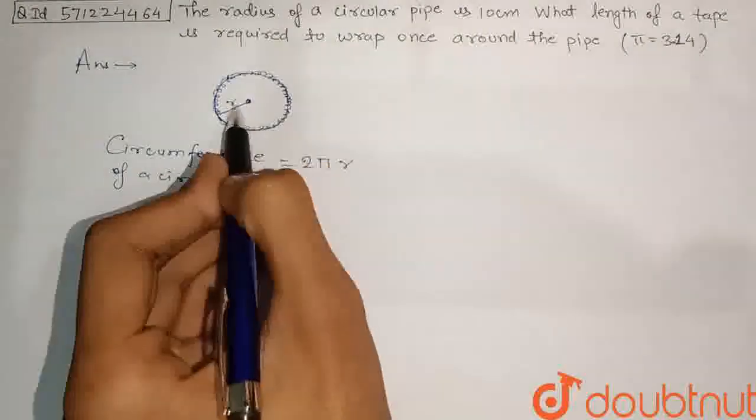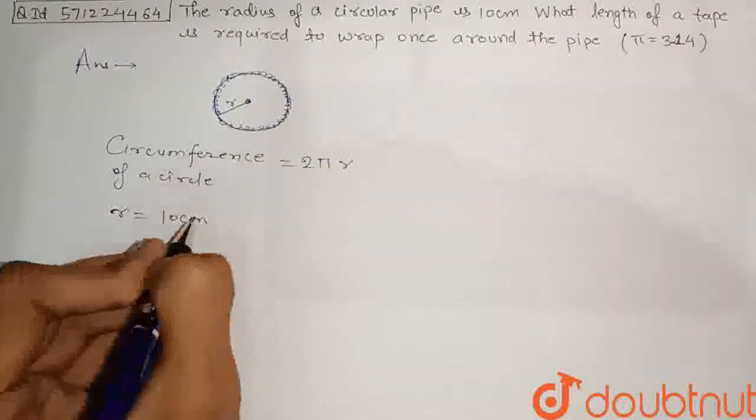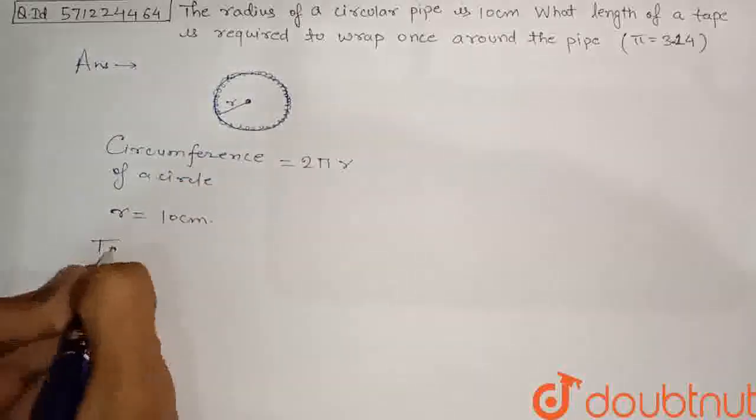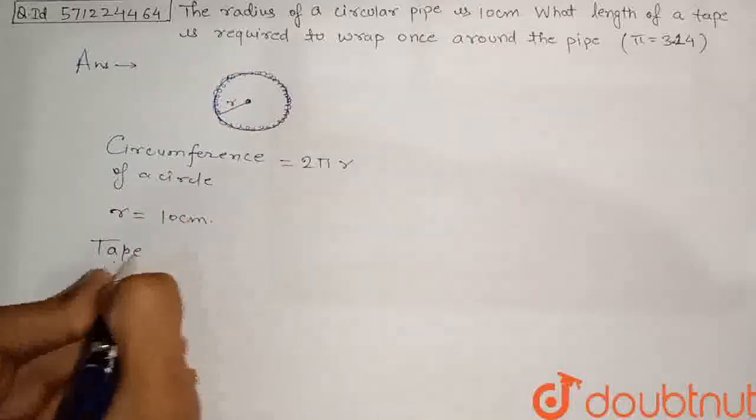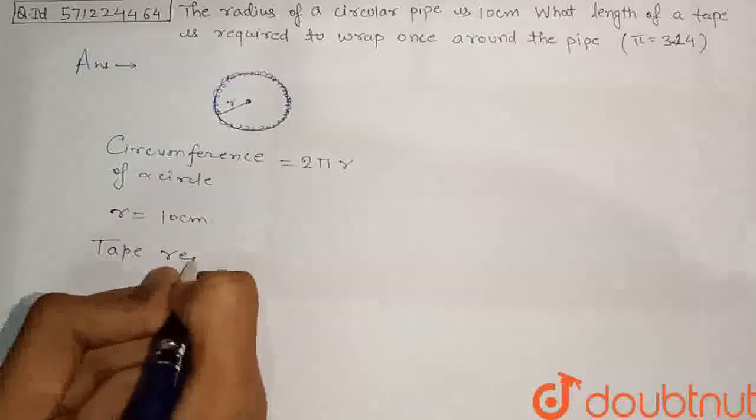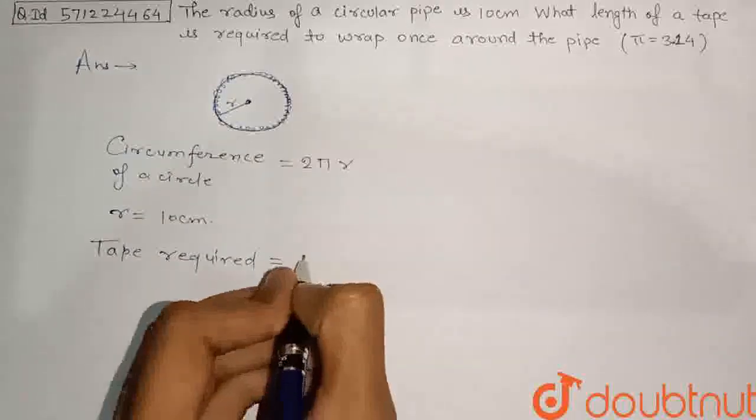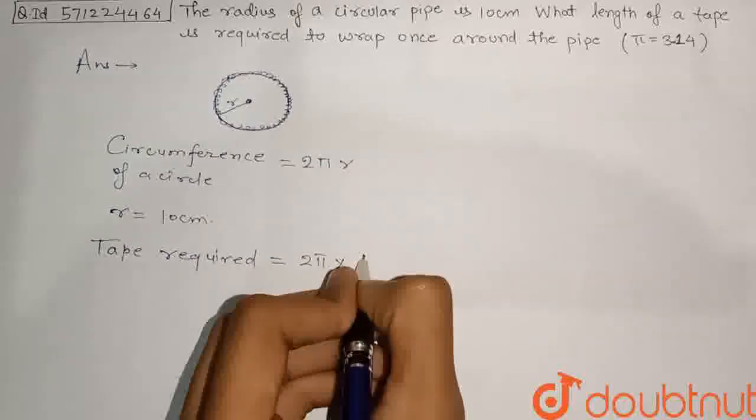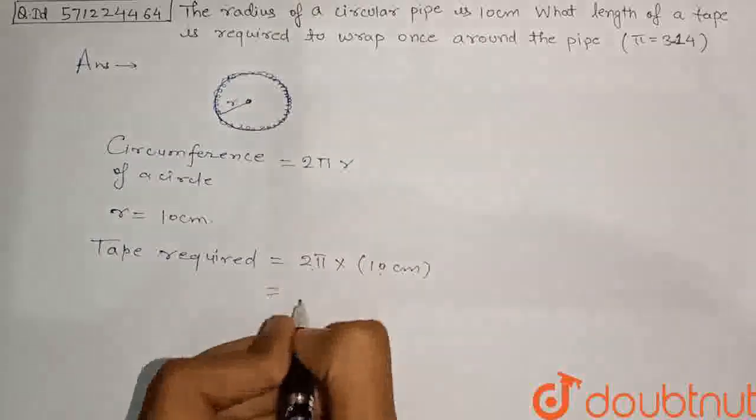The value of radius, this is the radius, so r is equal to 10 cm. So from here if we will just put this in the formula, tape required is the length of the circumference of the circle. So tape required will be equal to 2 pi r. So radius is 10 cm, so here we are putting 10 cm. From here it will be equal to 10 times 2.